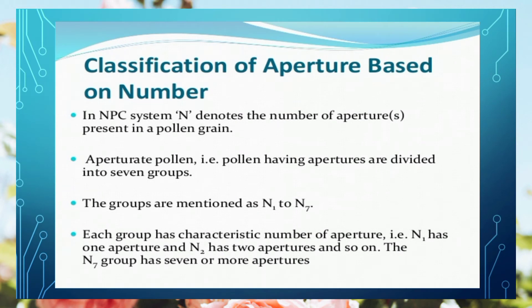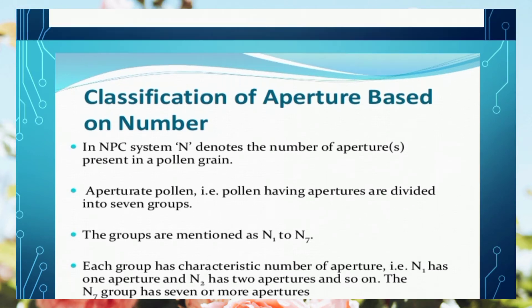Now we will discuss each classification feature one by one. Number one was N, which stands for number of aperture. If no aperture is present on a pollen grain, we call it inaperturate or aperturate — 'A' stands for nothing or absence. If one aperture is present, it is called aperturate pollen. Starting from aperturate pollen, we go from N1 to N7, where N3 indicates three apertures, and N7 indicates seven or more apertures.